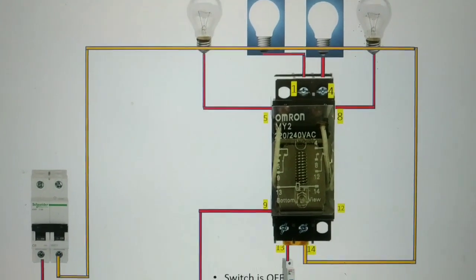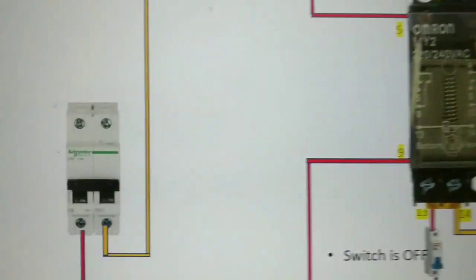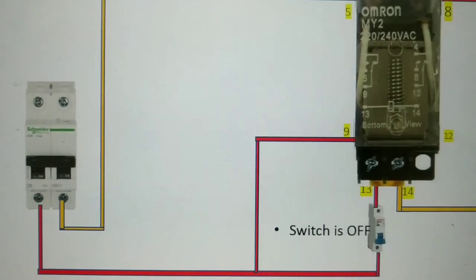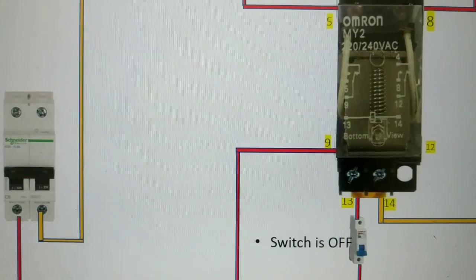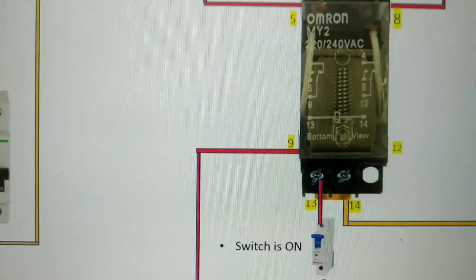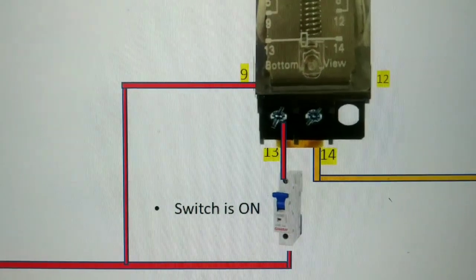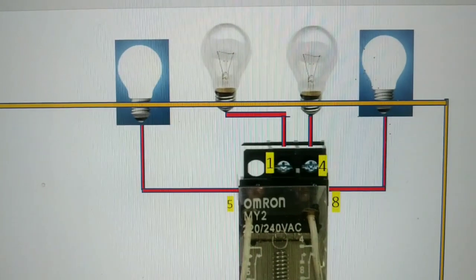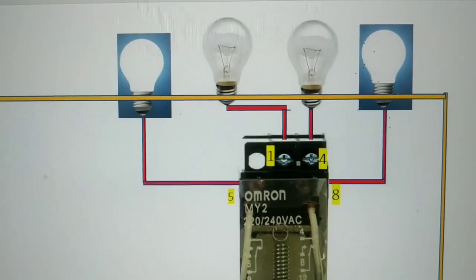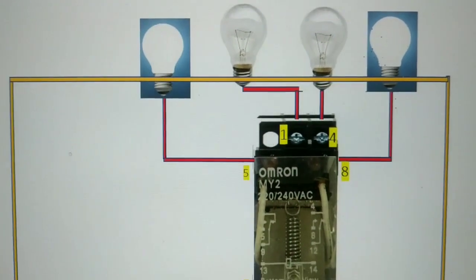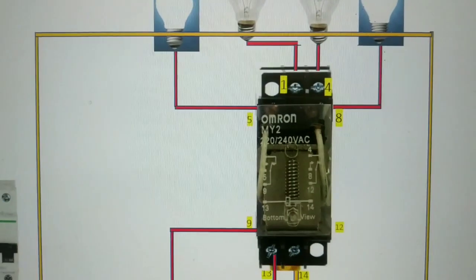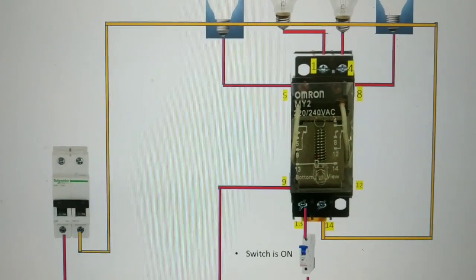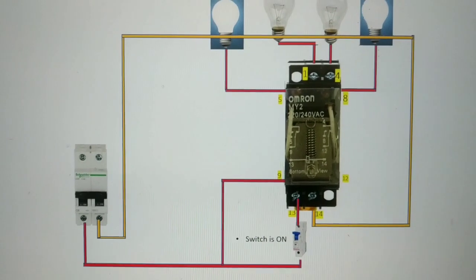When the switch is on the load is energized. When the switch is off the circuit is open. The contacts are connected in the circuit.